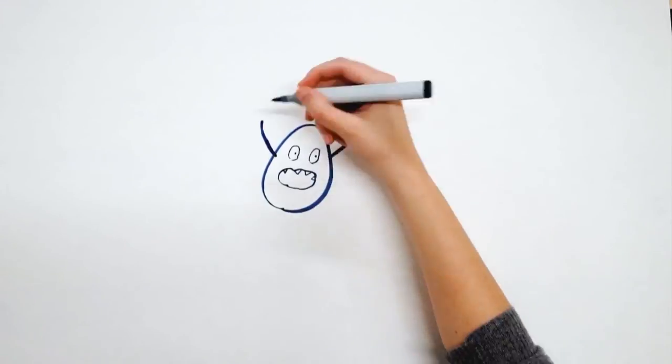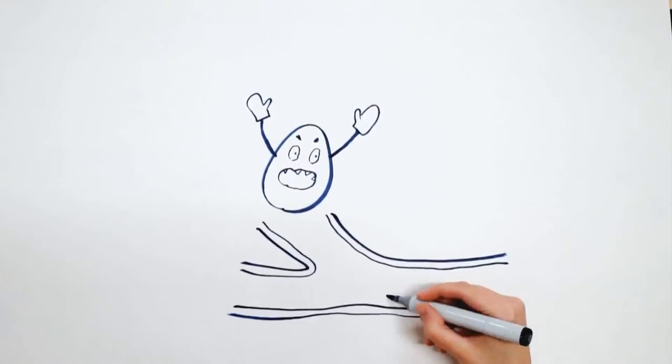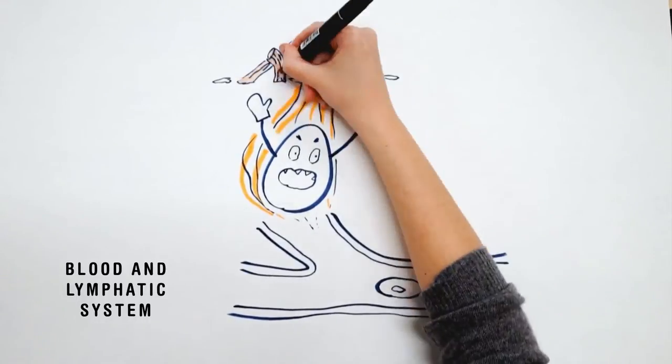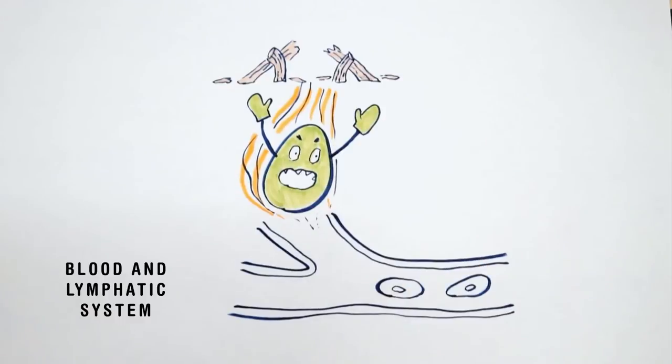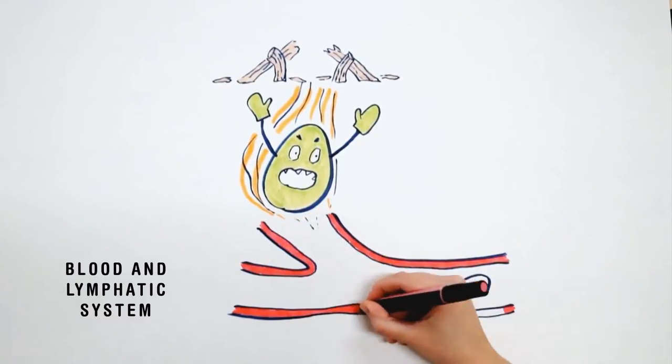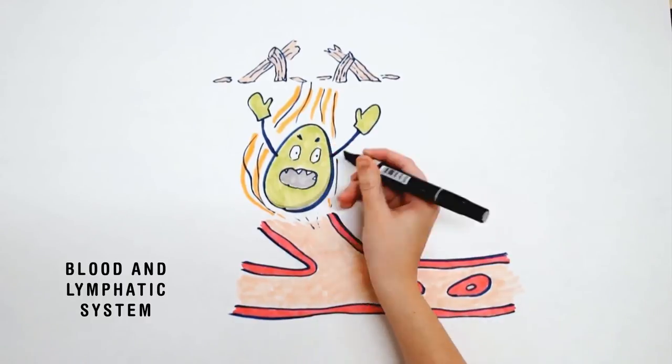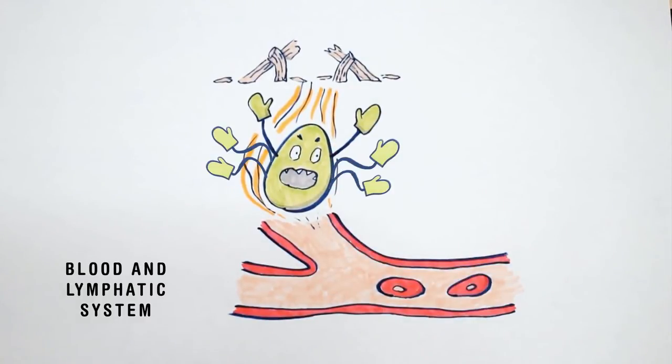With a hole in the fence cancer cells have nothing holding them in their original tissue or organ and they can move through the matrix to enter the blood or the lymphatic system. While only a small fraction of cells that escape into the bloodstream set up residence at another part of the body, it's this initial invasion and escape that sets up the possibility of the cancer spreading.